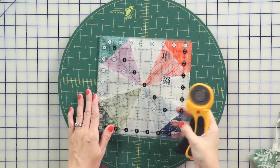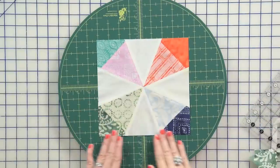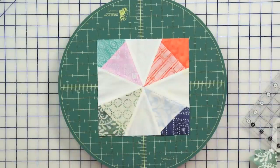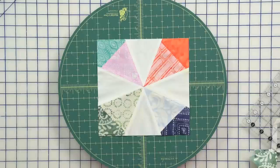And I always love when you trim down a block because the accuracy is perfect and your final quilt is gonna look nice and beautiful. You're gonna make 56 blocks.